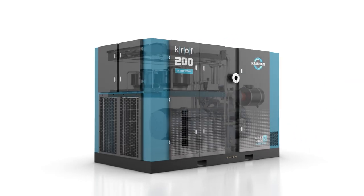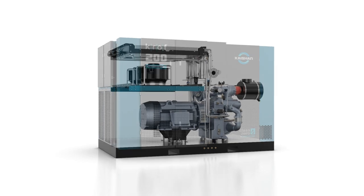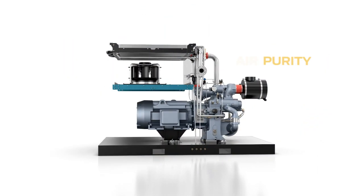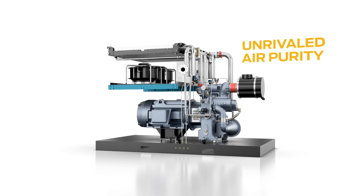The Kaishan KROF is an oil-free rotary screw air compressor that delivers ISO 8573-1 Class Zero compressed air that safeguards the integrity of your end product.